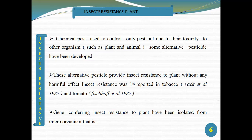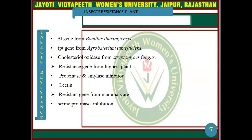Insect resistance was first reported in tobacco by Beck et al. in 1987, and in tomato by Fischhoff et al. in 1987. Genes conferring insect resistance to plants have been isolated from microorganisms — the BT gene from Bacillus thuringiensis, the IPT gene from Agrobacterium, and cholesterol oxidase from Streptomyces — as well as resistance genes from higher plants, proteinase and amylase inhibitors, lectin, and resistance genes from mammals.